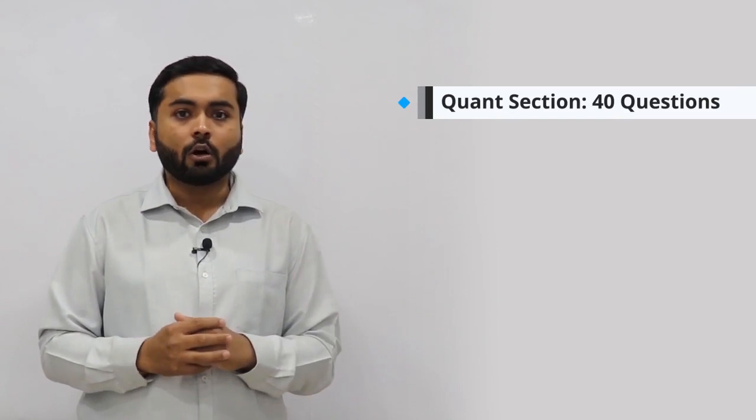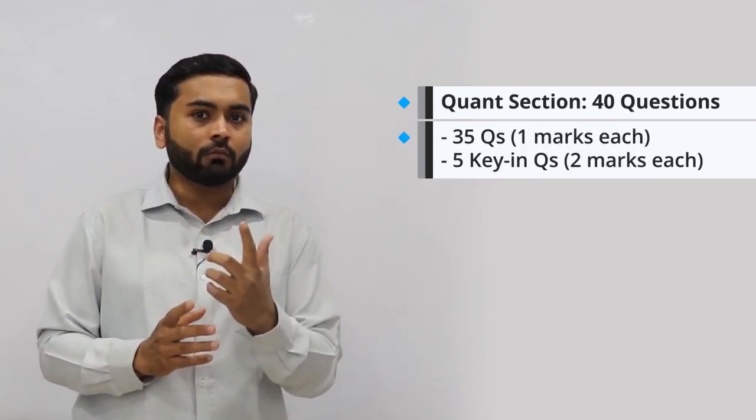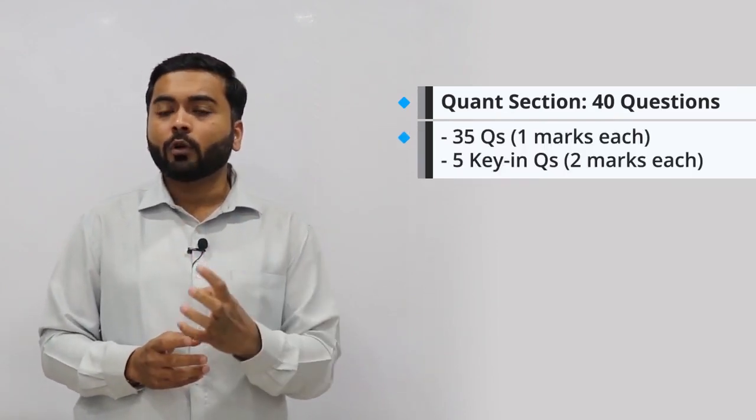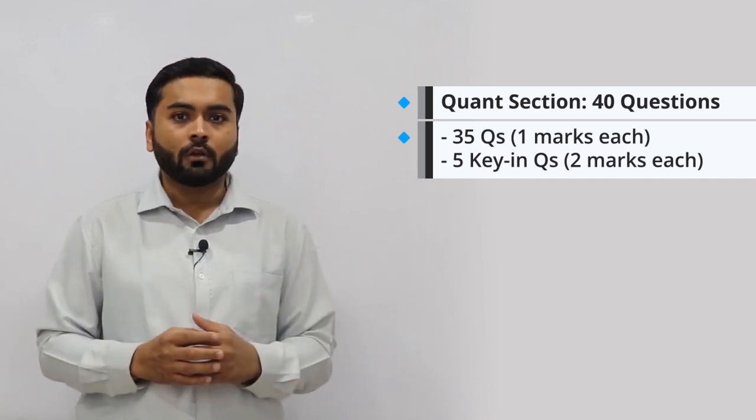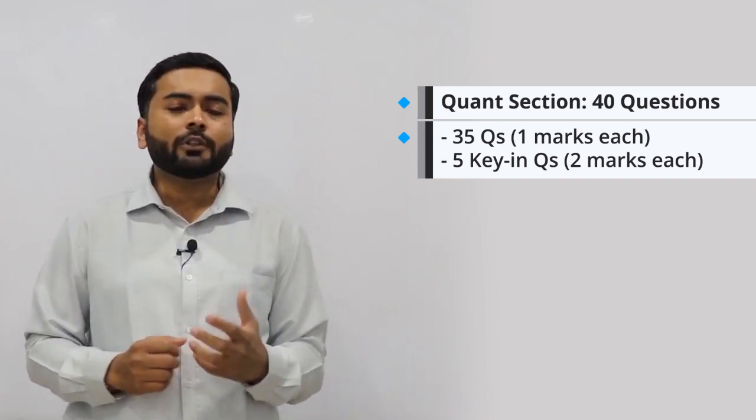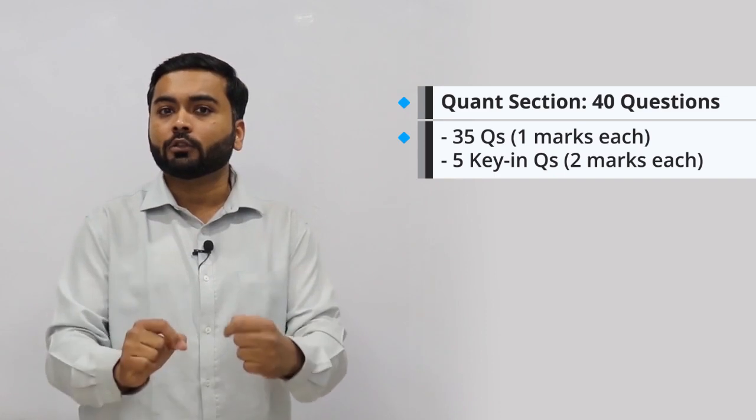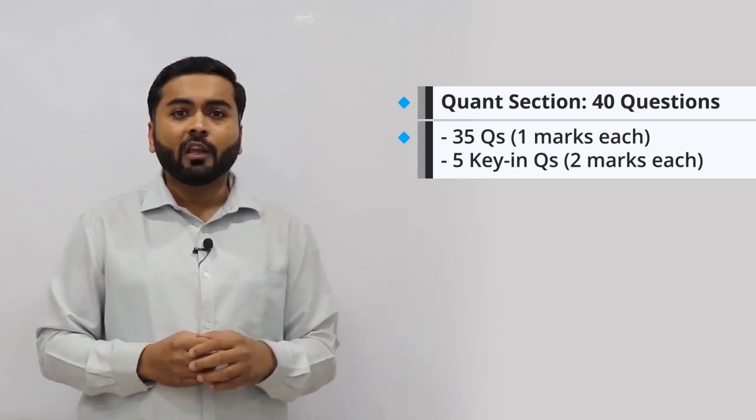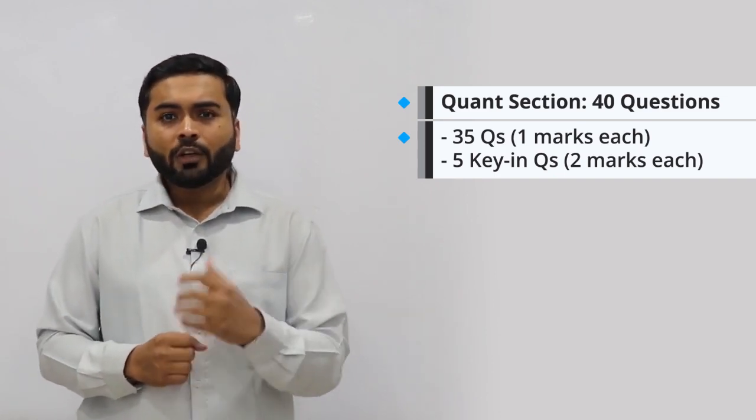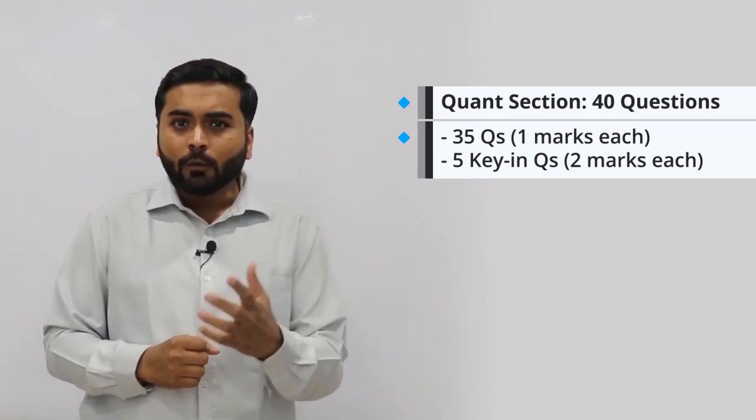This year in quant section, there are total of 40 questions, out of which 35 questions will be one mark each, and the remaining five questions, which they term as special questions, will be for two marks. For special questions, you have to type in the answer. For example, if I ask you what is 7 into 3, that's 21, so you have to actually type 21. There is no MCQ.